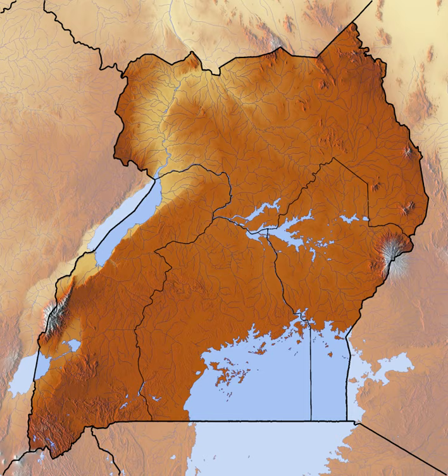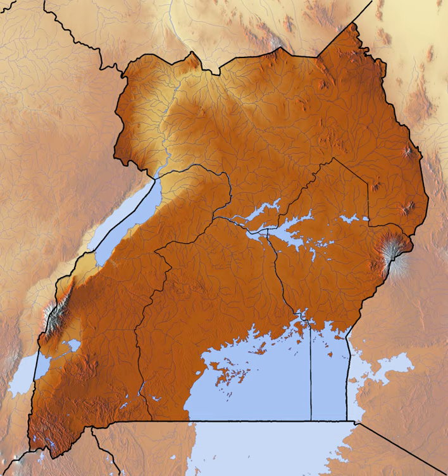Semaliki National Park is located in Bwamba County, a remote part of the Bundibugyo district, in western Uganda. It was made a national park in October 1993 and is one of Uganda's newest national parks. 194 square kilometres of East Africa's only lowland tropical rainforest is found in the park. It is one of the richest areas of floral and faunal diversity in Africa, with bird species being especially diverse. The park is managed by the Uganda Wildlife Authority.